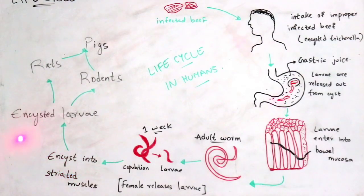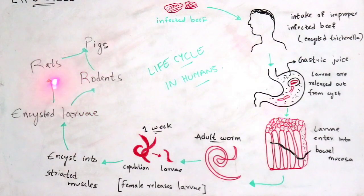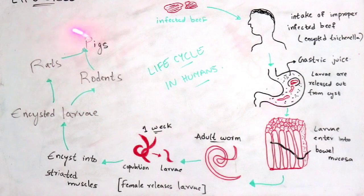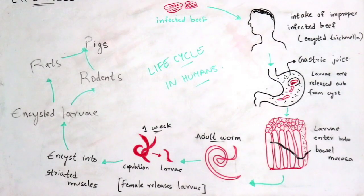After encystation, the encysted larvae enter into rats or rodents. Rodents are mammals, and these rats and rodents are consumed by pigs. The pigs then undergo the same life cycle of Trichinella, and the pigs are again consumed by humans in the form of beef or pork.